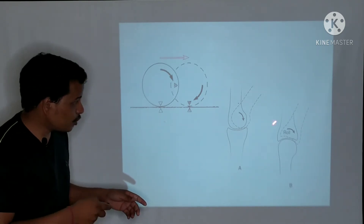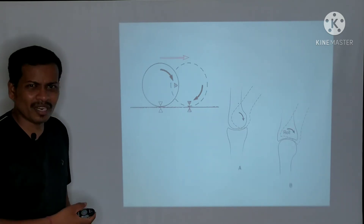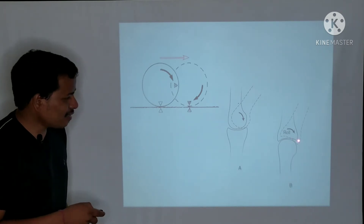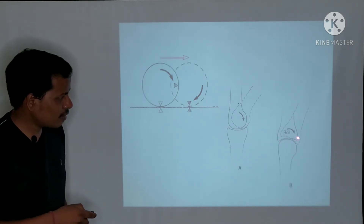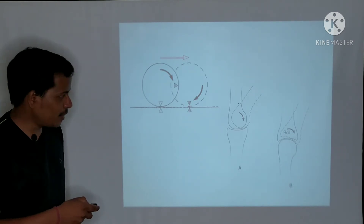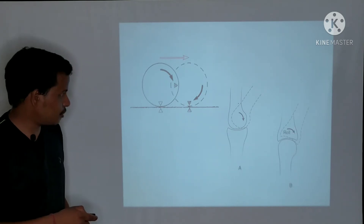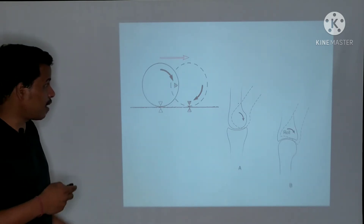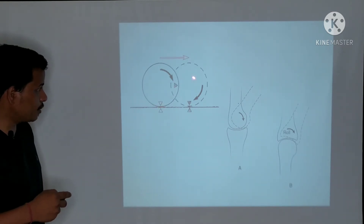Looking at picture B, the concave articular surface is rolling — for example, assume it is flexion — resulting in compression on one side and separation on the other. The dotted concave articular surface indicates the direction of rolling. A new point on one surface meets new points on the opposite surface.